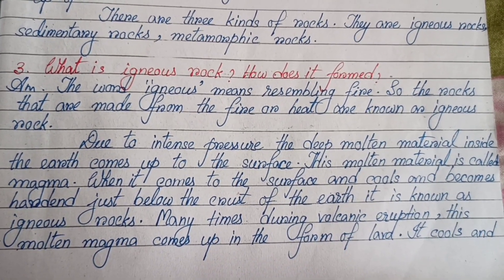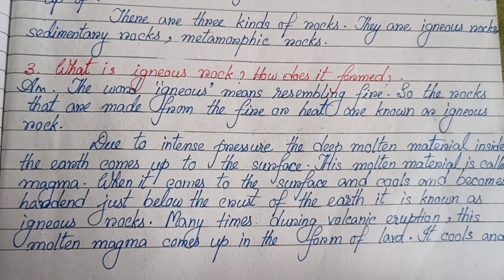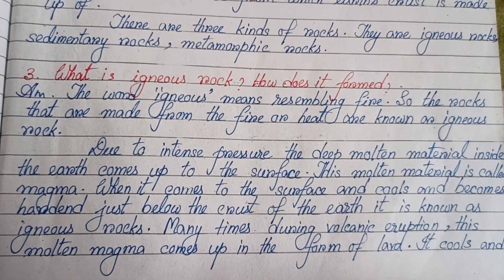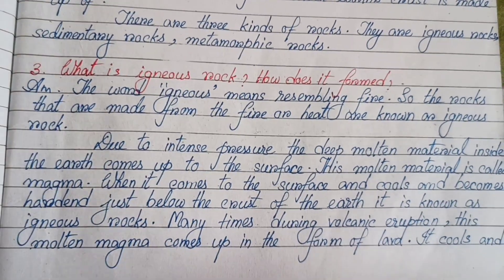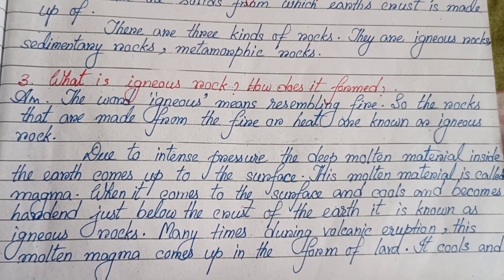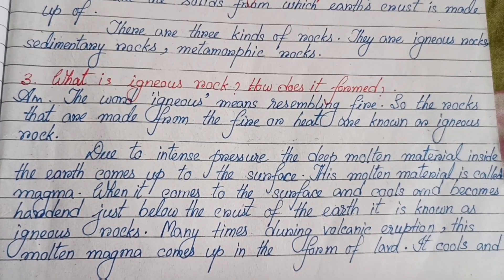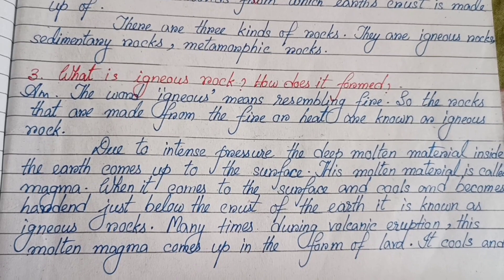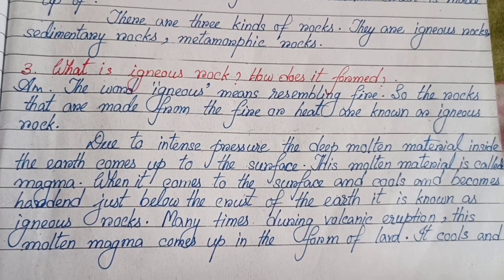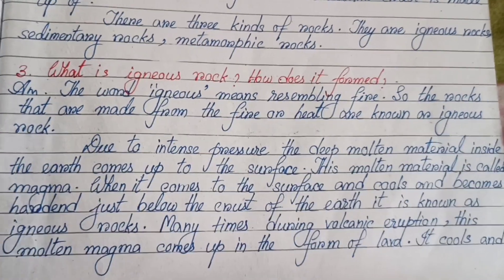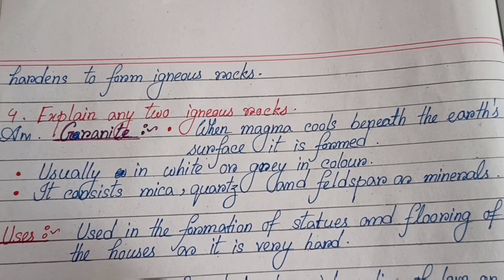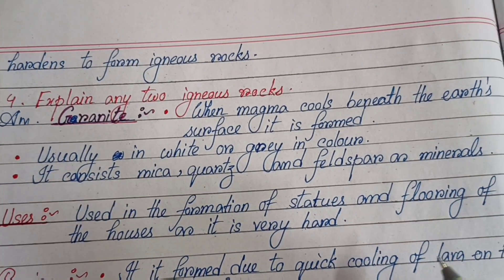Due to intense pressure, the deep molten material inside the Earth comes up to the surface. This molten material is called magma. When it comes to the surface and cools and becomes hardened just below the crust of the Earth, it is known as igneous rock. Many times during volcanic eruption, this molten magma comes up in the form of lava. It cools and hardens to form igneous rocks.